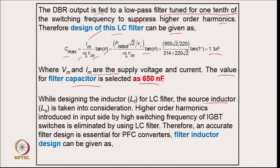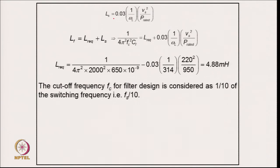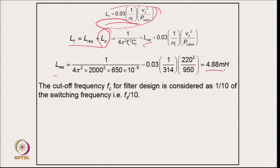While designing the inductor for the LC filter, the source inductor is taken into consideration. Higher-order harmonics introduced by the switching frequency are eliminated by the LC filter; therefore, accurate filter design is essential for the PFC converter. The filter inductor is calculated from the relation where total inductance equals source inductance plus required inductance, giving 4.88 mH. A slightly higher value is selected with the cutoff frequency at one-tenth of the switching frequency.